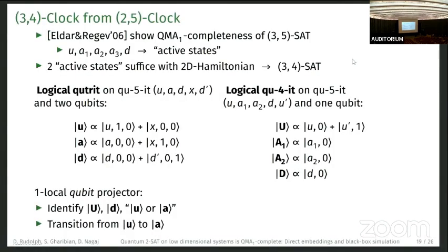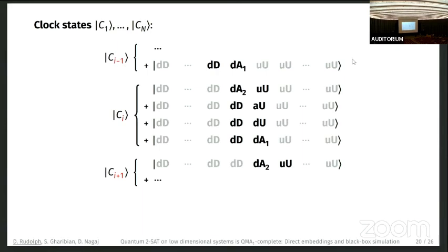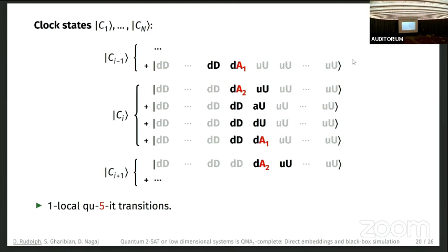We can perform a transition from U to A by flipping a qubit, but must ensure we do not act on the D state. Combining these clock states: each clock state c_1 through c_n has many dead states, a single alive state, and unborn states. Each clock state is a solution of four terms, enforceable with two-by-five projectors. This gives a one-local transition between two adjacent clock states on a five-dimensional qudit, enabling the full clock construction.